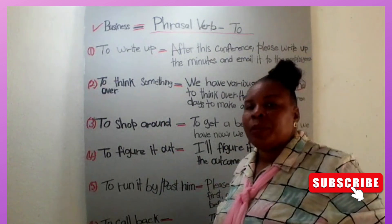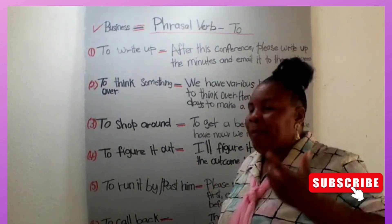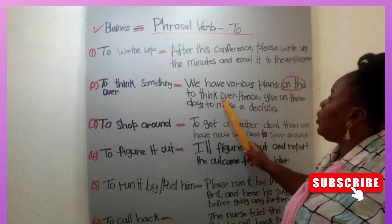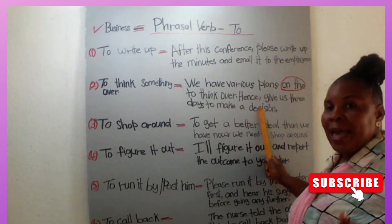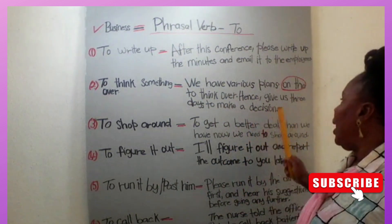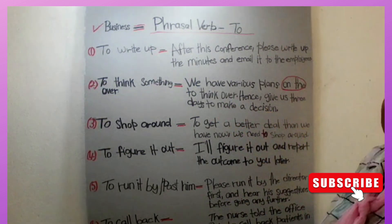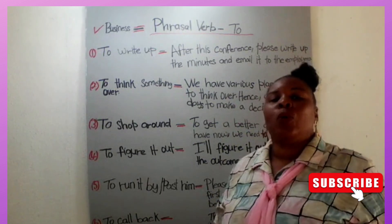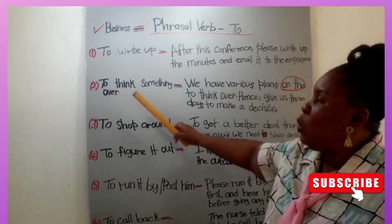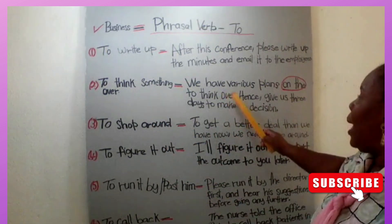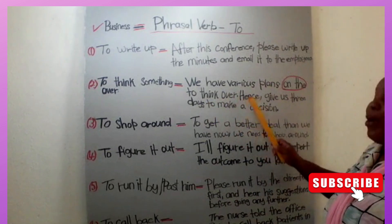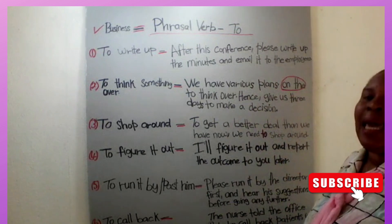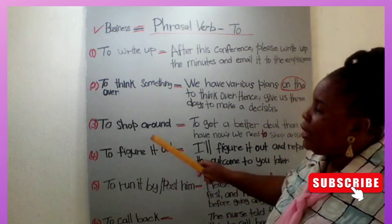Number two: to think something over — to reflect on something, to pass it through your mind. For example: 'We have various plans to think over; therefore, give us three days to make a decision.' You need extra time to make a decision, so you can think something over.